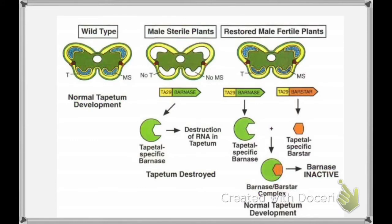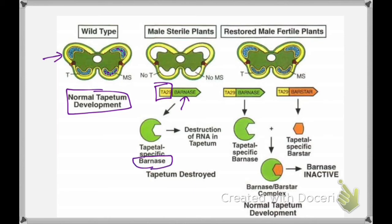This picture explains the process of male sterility. In a normal plant, there is normal tapetum and you can see pollen inside. When we introduce the barnase gene along with the tapetum-specific promoter ta29, those genetically engineered plants will not produce pollen, because the barnase enzyme destroys RNA in the tapetum, causing it to be completely destroyed.